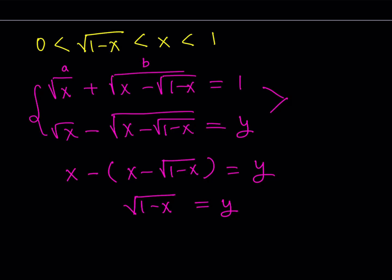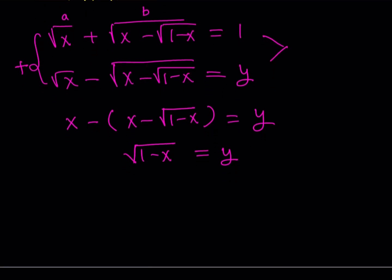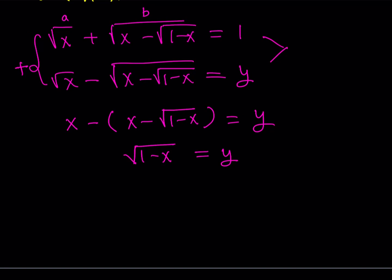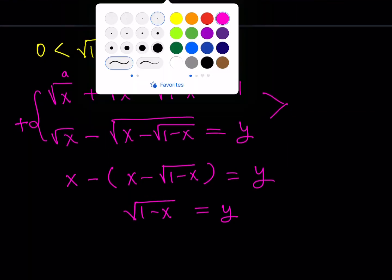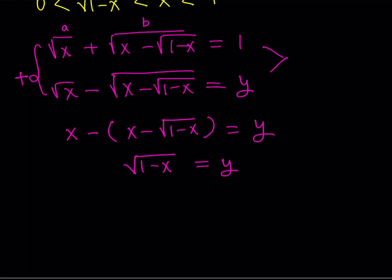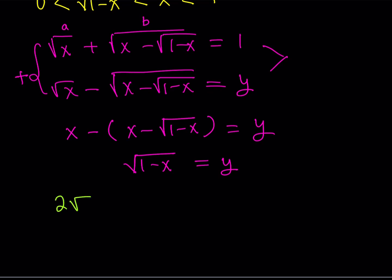This is cool, but let's make it cooler. Now let's add the two equations. The second terms cancel out and we get 2 times square root of x equals y plus 1. But I know y equals square root of (1 minus x), so I can substitute that in and replace y with square root of (1 minus x).